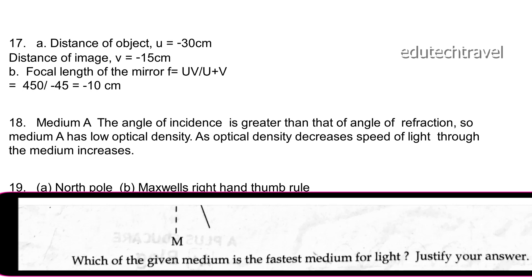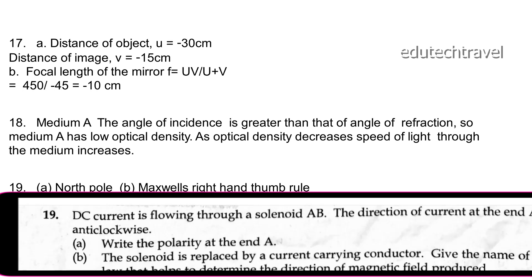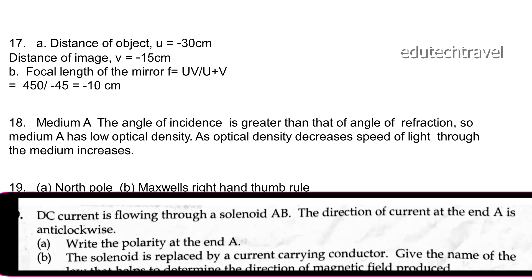DC current is flowing through solenoid AB. The direction of current at end A is anticlockwise, making end A a north pole. The law that helps determine the direction of the magnetic field produced is the right-hand thumb rule.